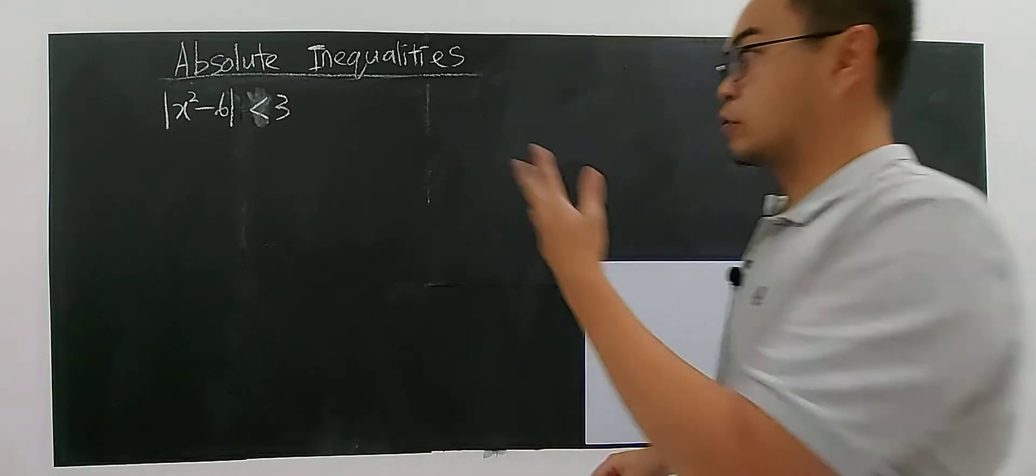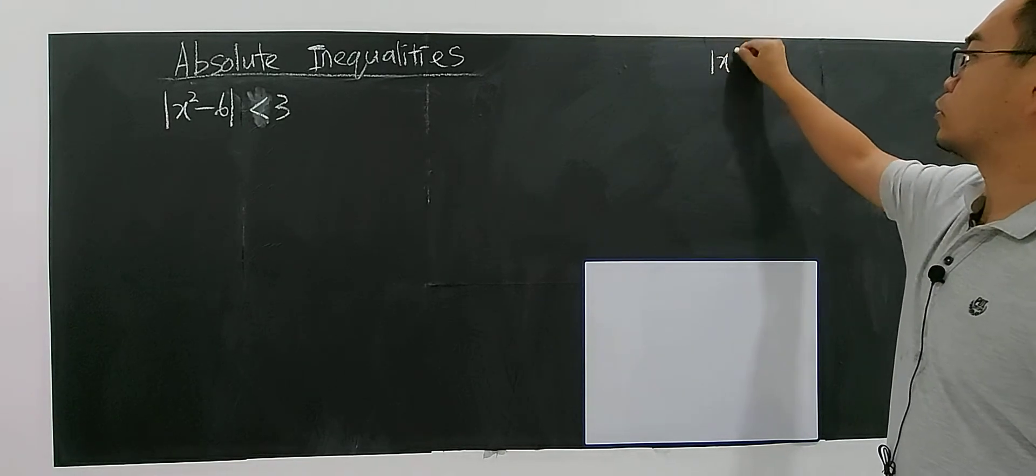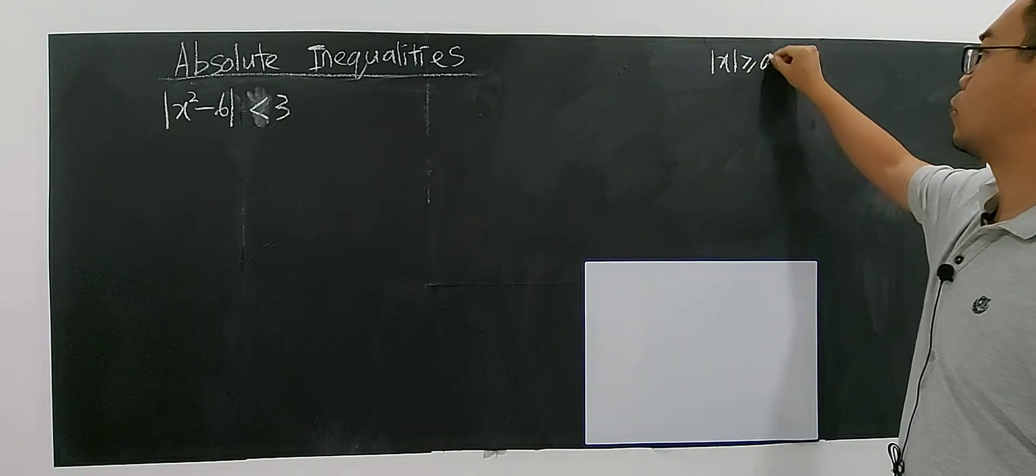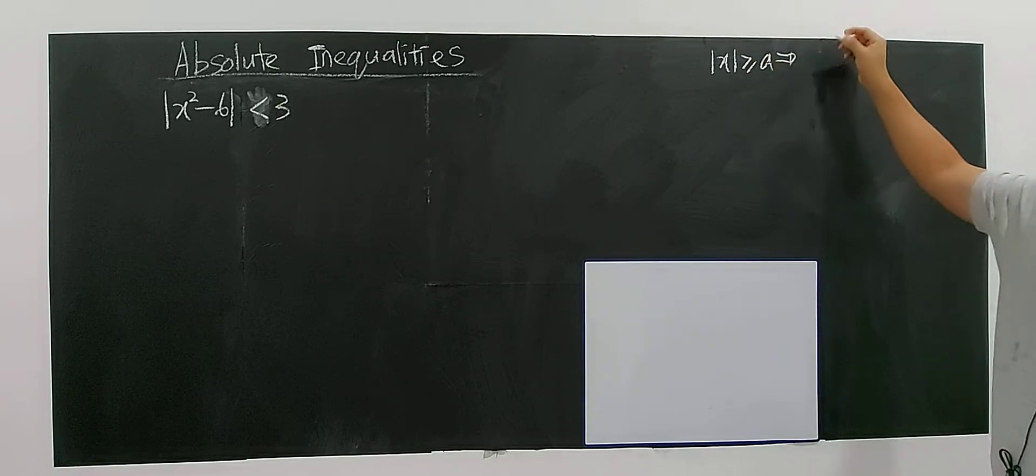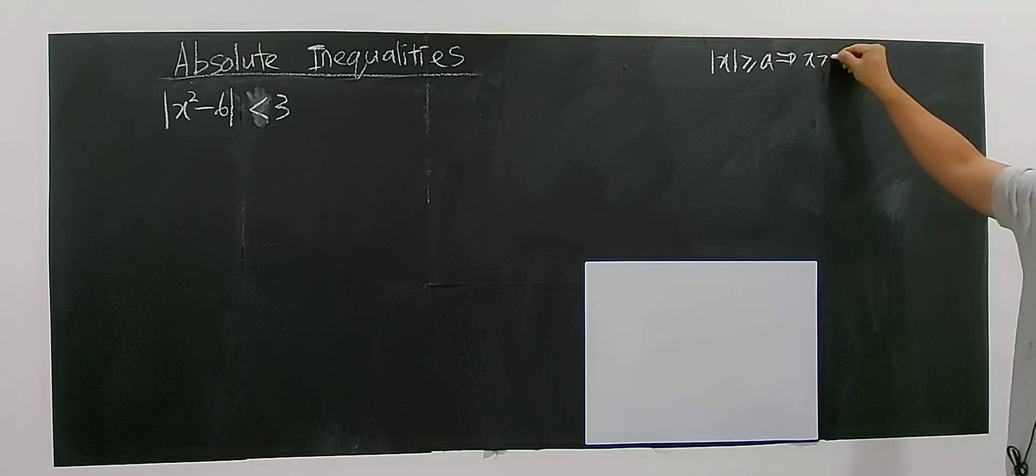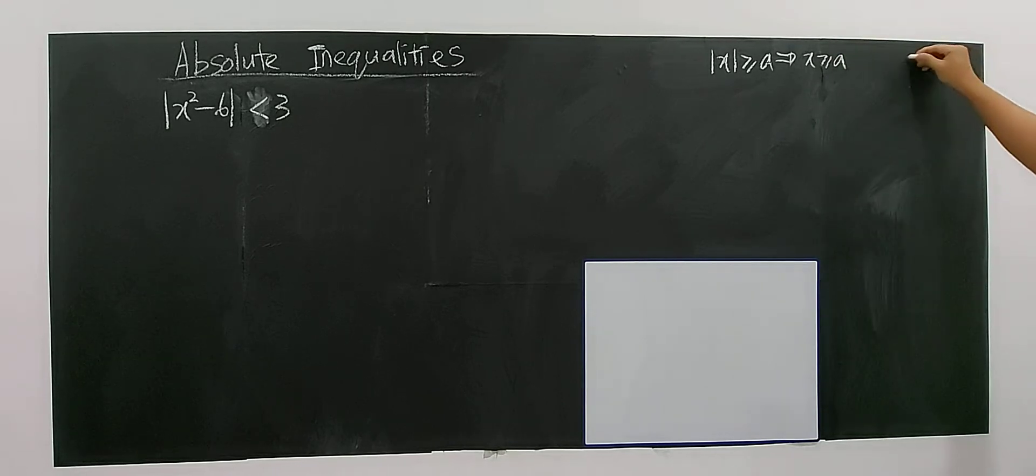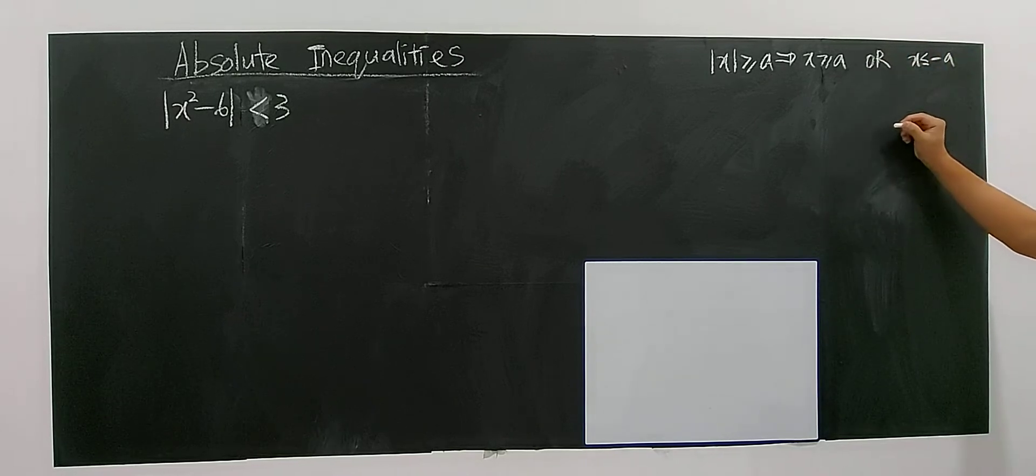Every time when you do the question, you rewrite the formula, right? If you have modulus x less or more or equal a, then the result will be either is more or equal, the result will be always one greater positive a and one less negative a. And this will be or.